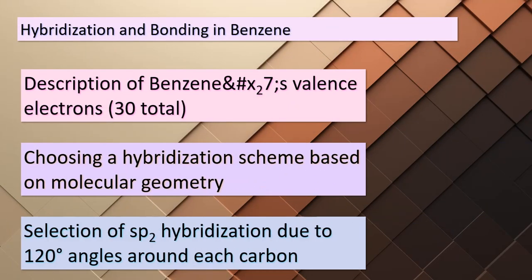Today we're delving into the fascinating world of benzene's bonding structure and its hybridization. Benzene has a total of 30 valence electrons. In benzene, each carbon atom is surrounded by three atoms at 120-degree angles. This unique arrangement leads us to the choice of sp² hybridization. Through this hybridization, six localized C–C sigma bonds and six localized C–H sigma bonds are formed, derived from the sp² hybrid orbitals, as shown in figure 9.25. Remarkably, 24 of the valence electrons find their purpose in creating these strong sigma bonds.